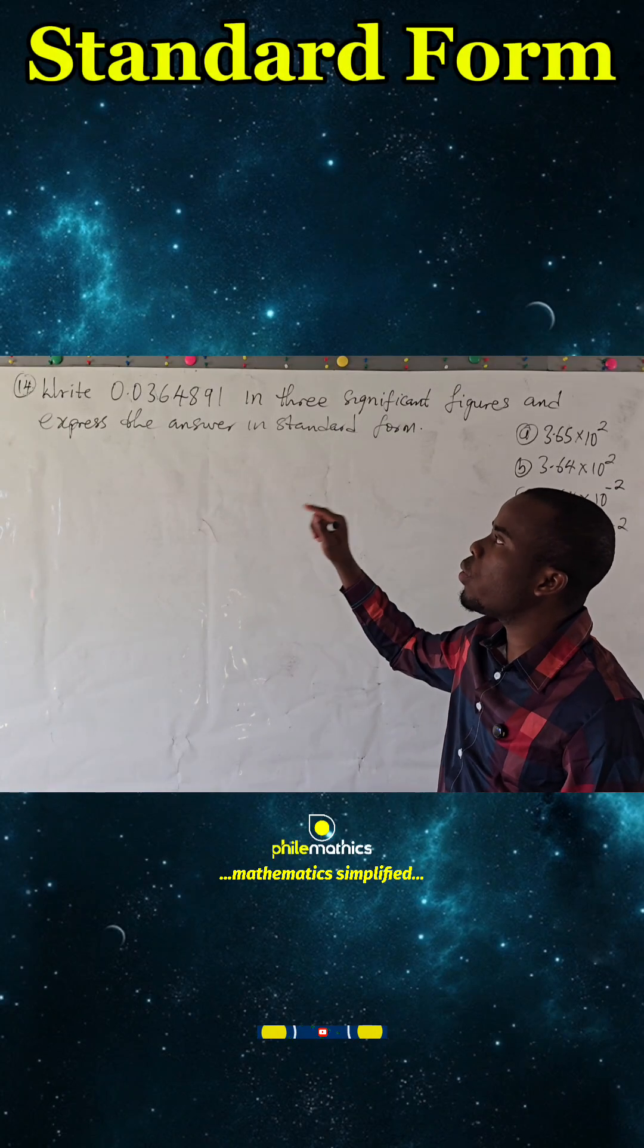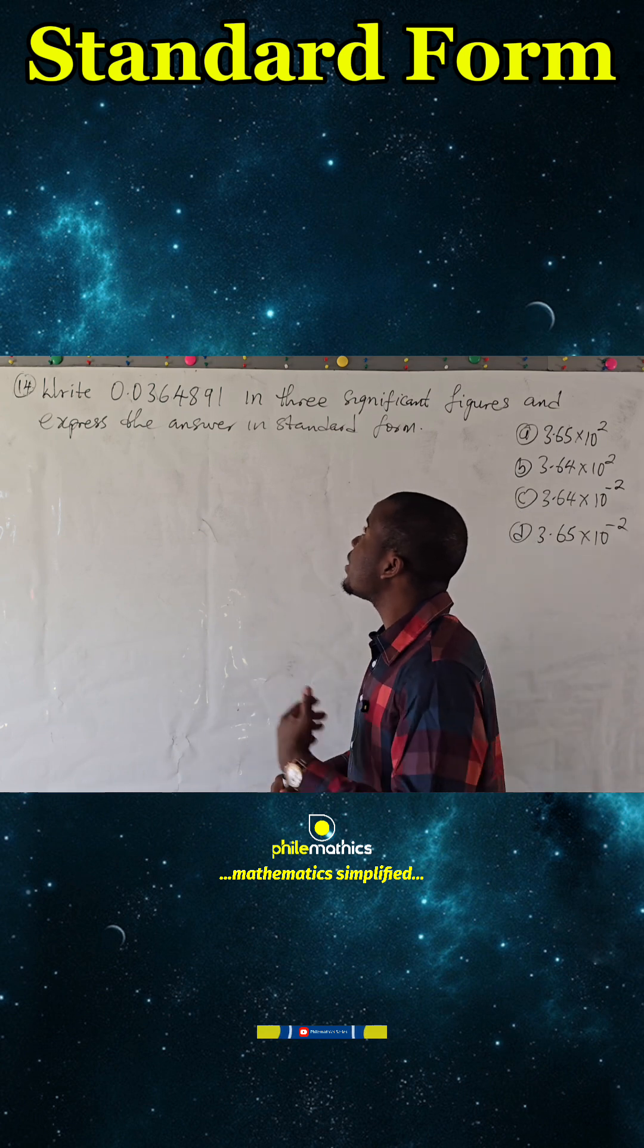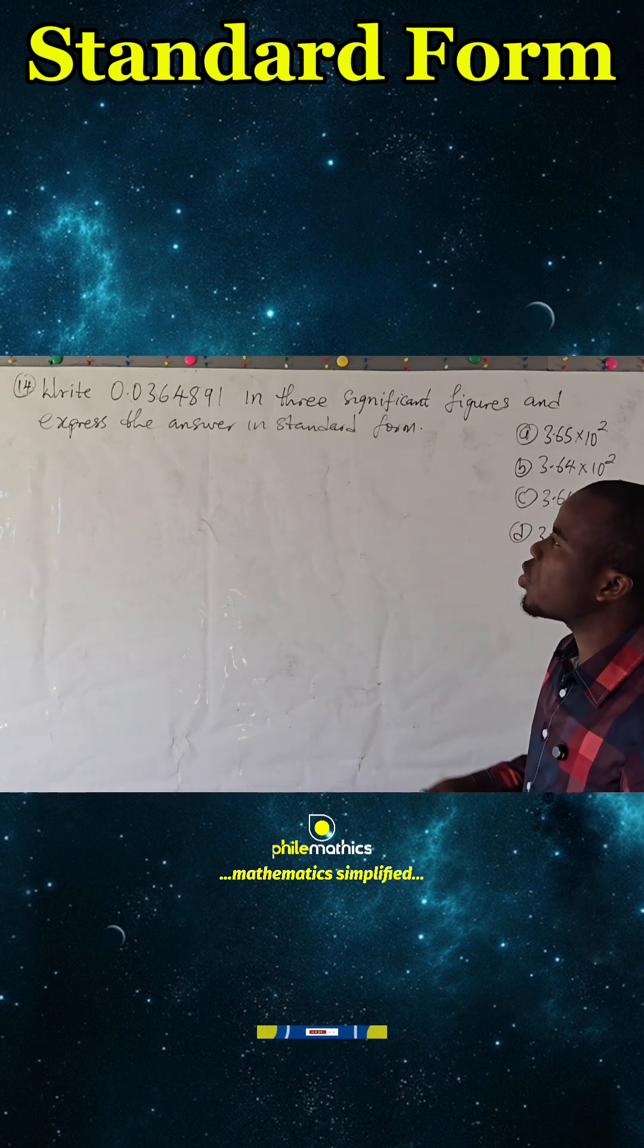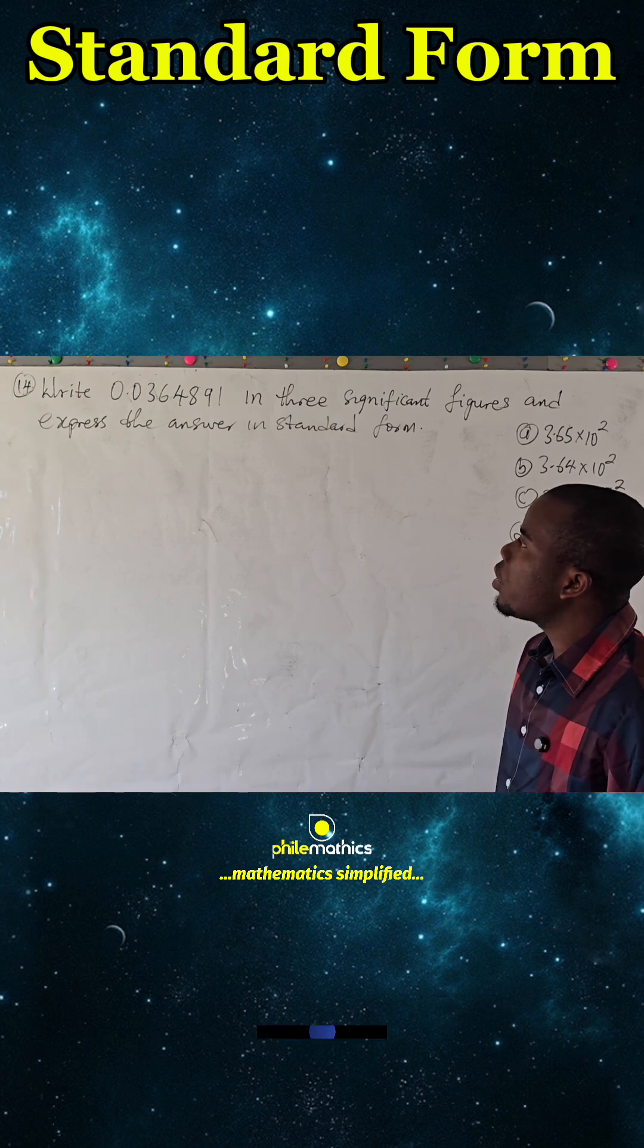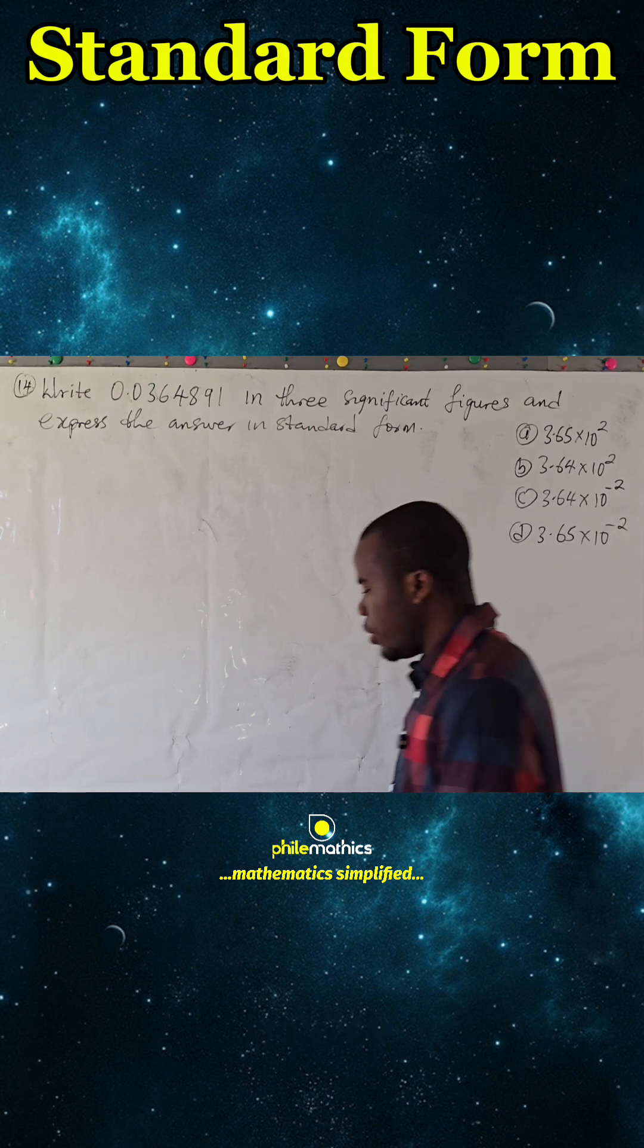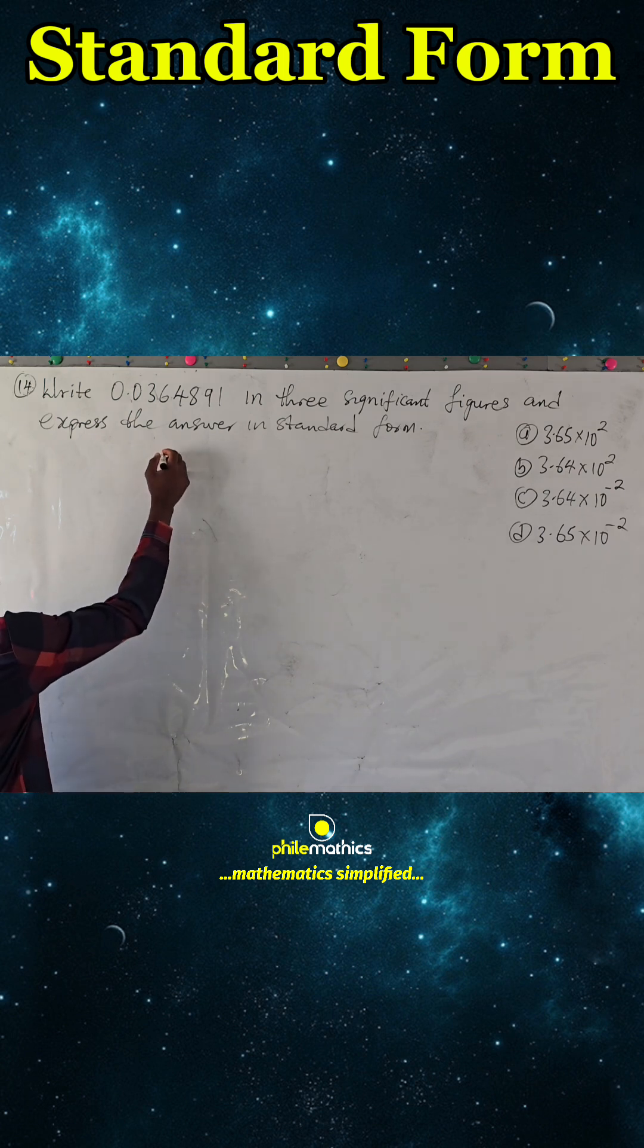Write 0.0364891 in three significant figures and express the answer in standard form. What does standard form mean? To express a number in standard form simply means to put it in this form: